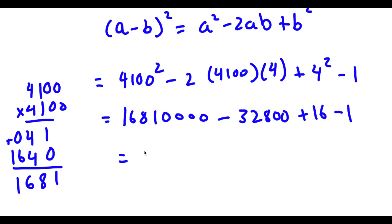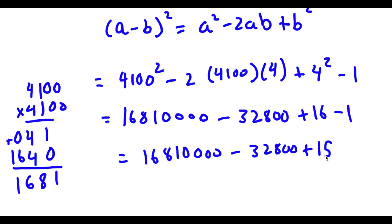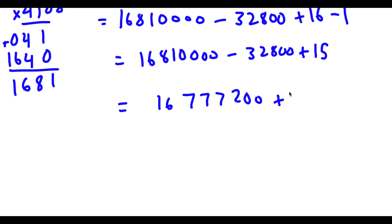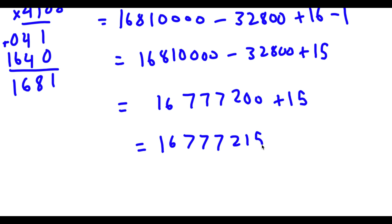And now this is equal to 60,810,000 minus 32,800 plus 15. Subtracting these two gives 16,777,200 plus 15, and adding these together equals 16,777,215.